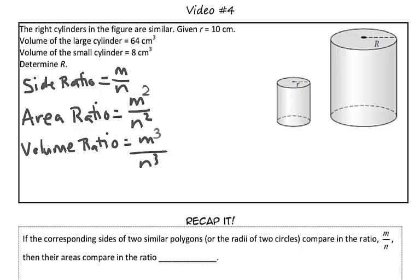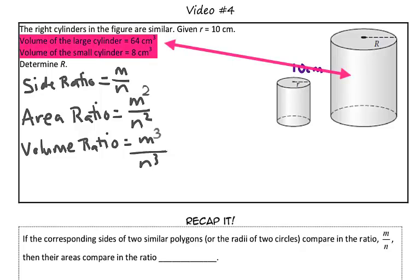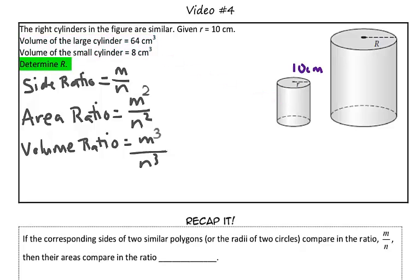Now, taking a look at this problem, we are told that the right cylinders in the figure are similar. We are given that r is 10 centimeters, and we're told the volume of the large cylinder is 64 centimeters cubed, and the volume of the small cylinder is 8 centimeters cubed. We are trying to solve for the larger radius of the larger cylinder.